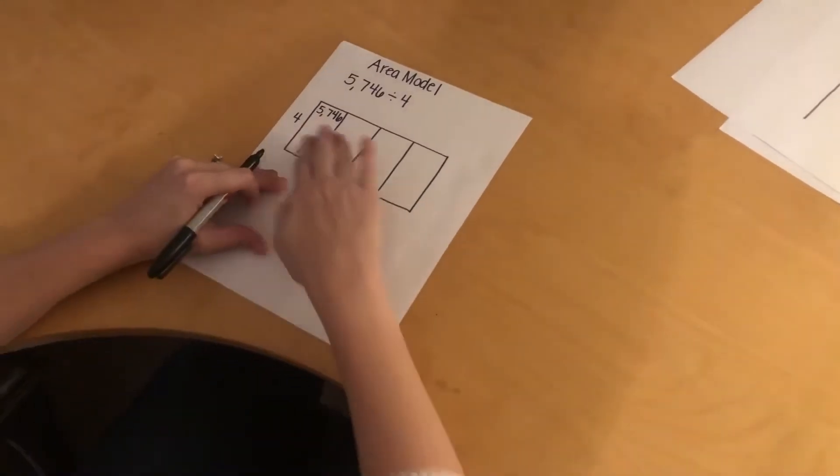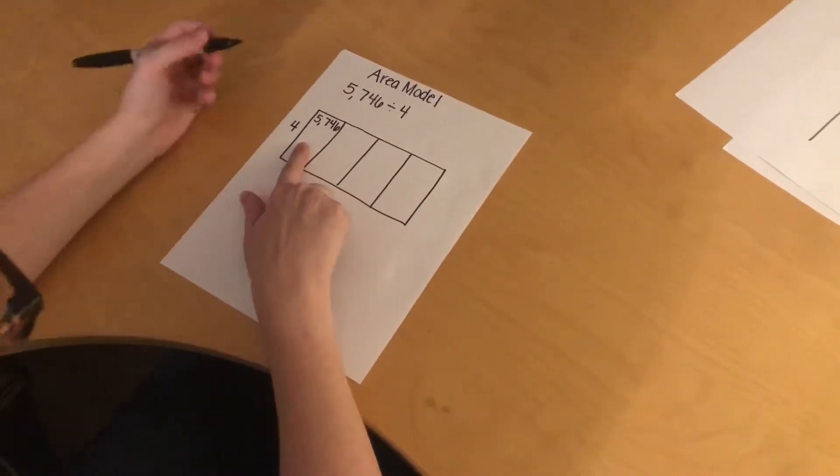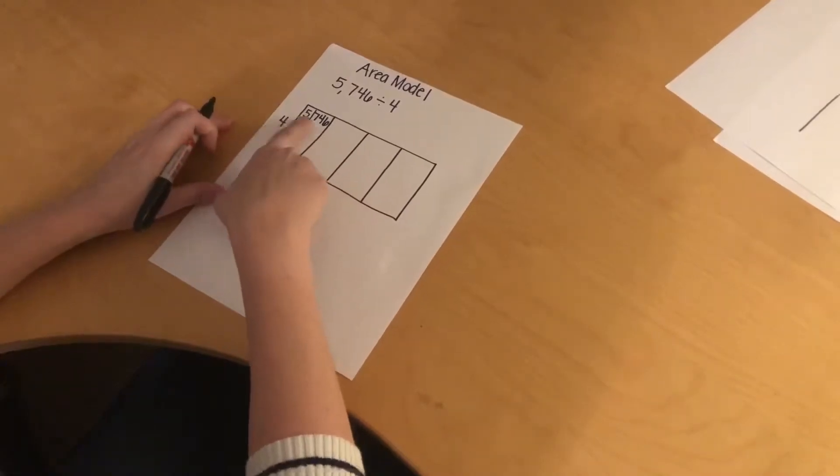I like to think of this as a place value chart, and so this is my 1s, 10s, 100s, 1000s. So in this number, I think, how many thousands do I have? 5's in the thousands place, so I read everything in front of it. In this case, it's just a 5.